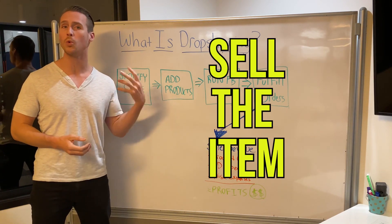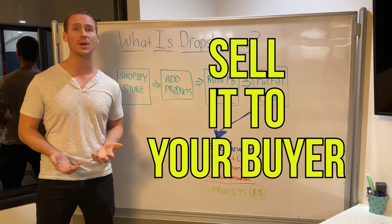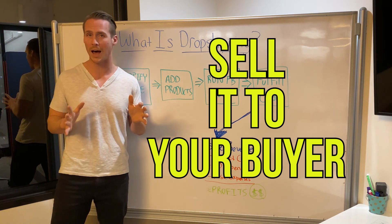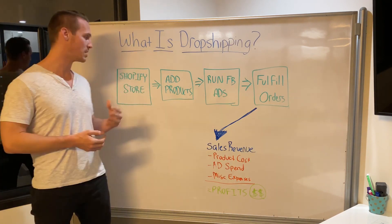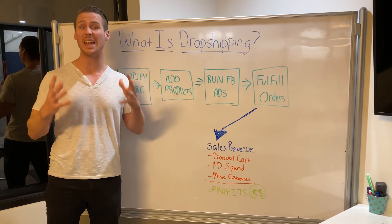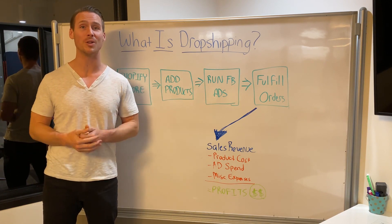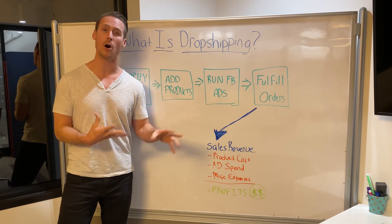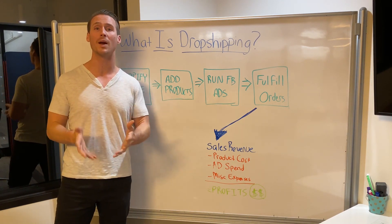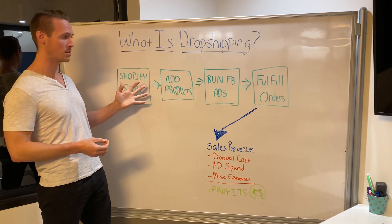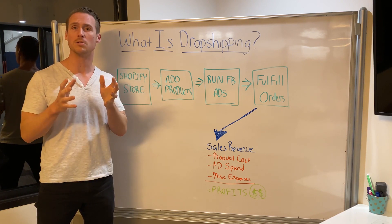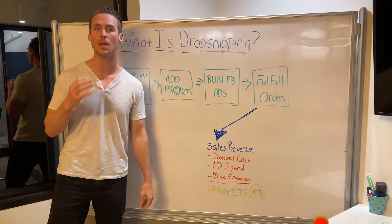Typically you want to sell the item to your buyer for about three times the cost — so customers pay roughly 3x what it costs you, sometimes three to four times. Once you've found your product, many AliExpress listings come with high-quality images and videos you can use. You then create a product page with persuasive, emotionally driven sales copy to entice people to make a purchase.